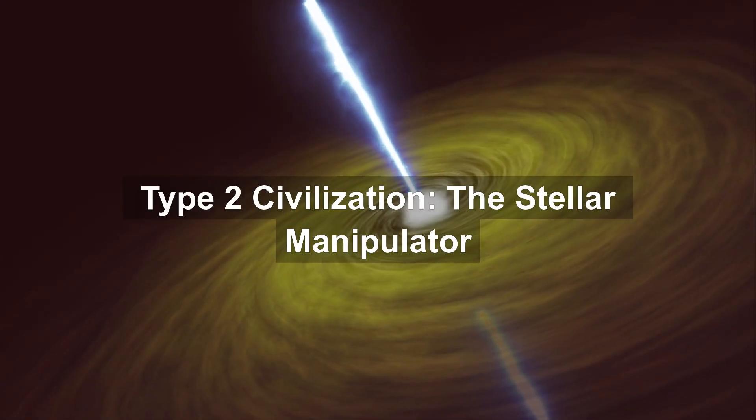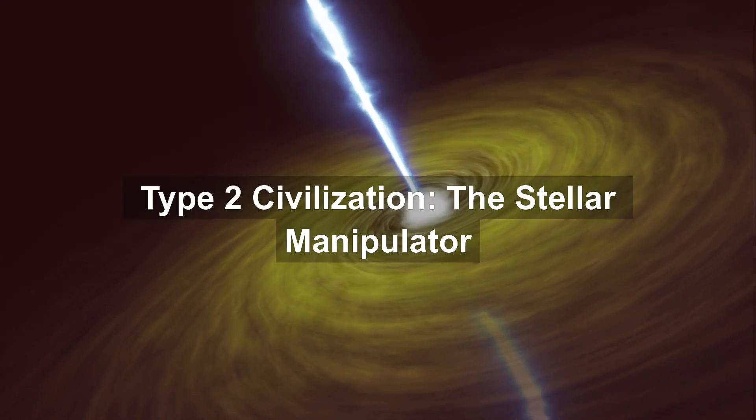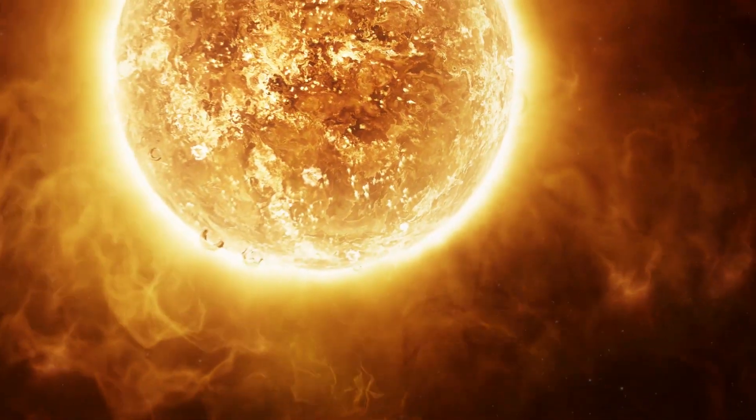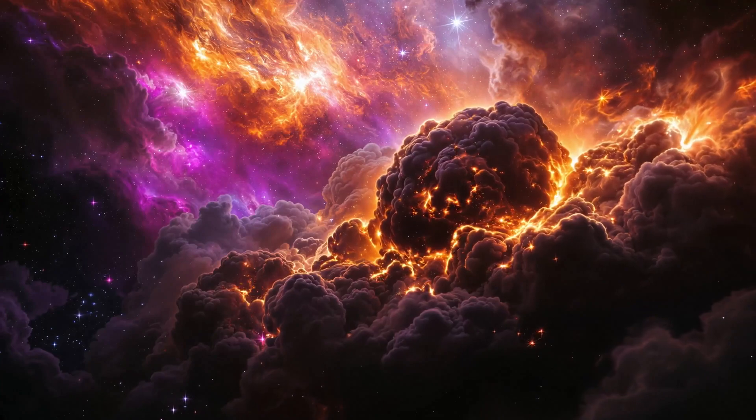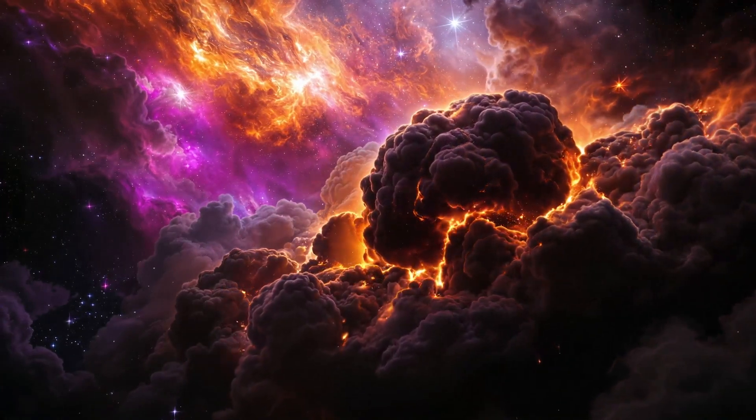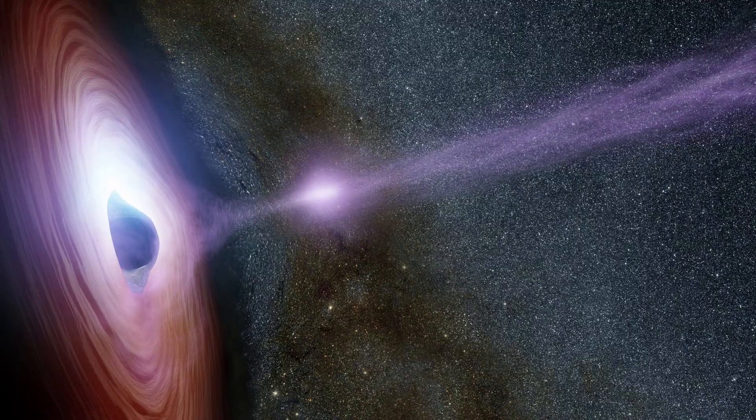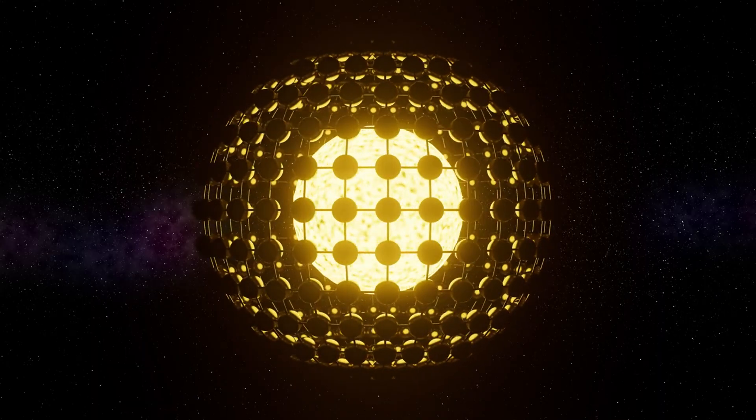Type 2 civilization: the stellar manipulator. A Type 2 civilization can harness the full power of its sun. That's 10 to the 26 watts of energy, more than a billion times what humanity uses today.